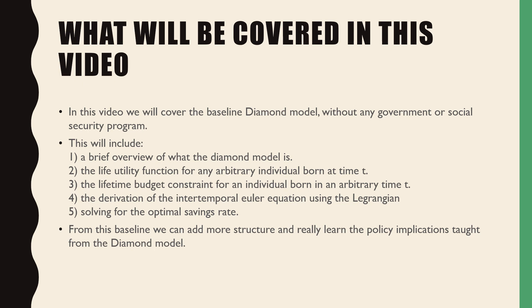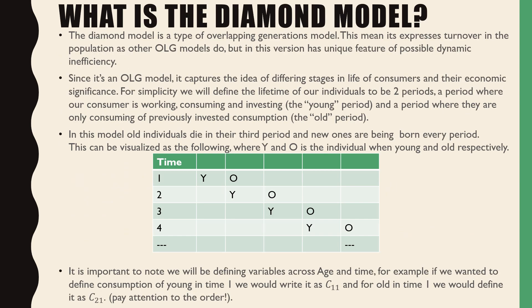From this baseline model we can add more structure and really learn the policy implications taught from the Diamond model. So what is the Diamond model? The Diamond model is a type of overlapping generations model which means it expresses turnover in the population.